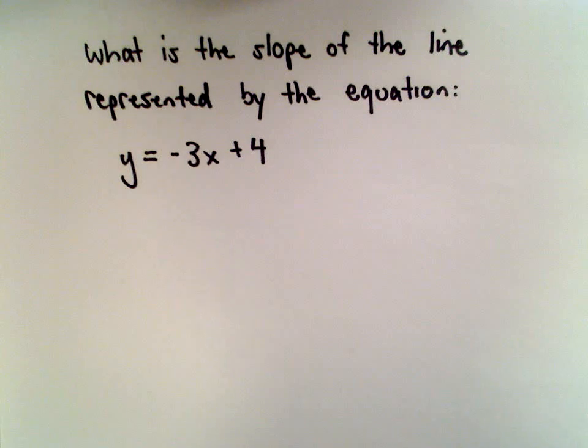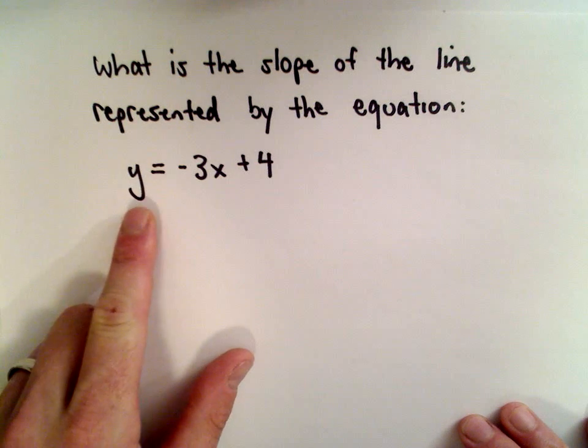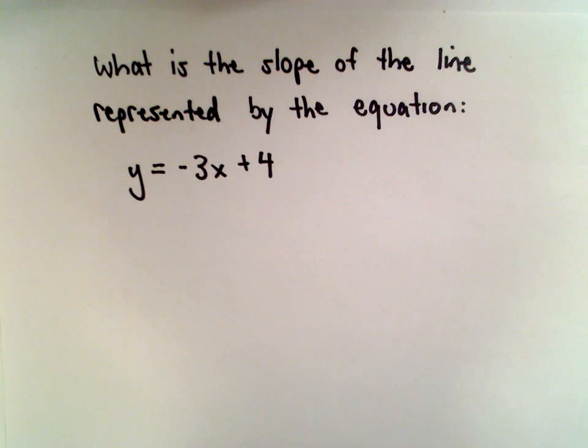Okay, in this example, we're going to find the slope of the line that is represented by the equation y equals negative 3x plus 4. So I'm going to do this one in two different ways, just to show you a couple different approaches.